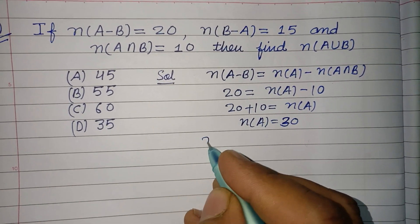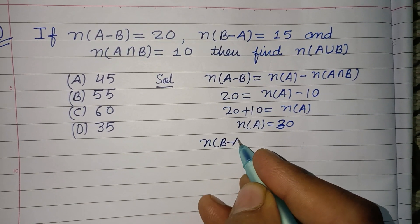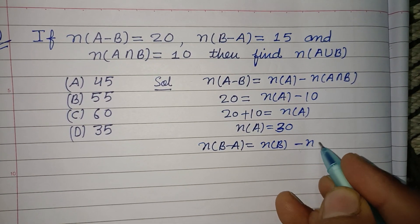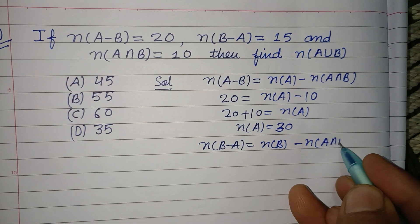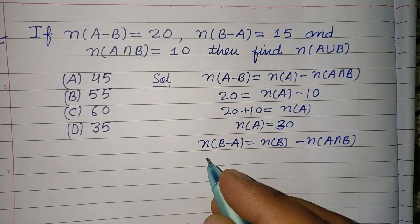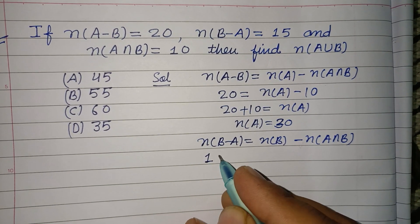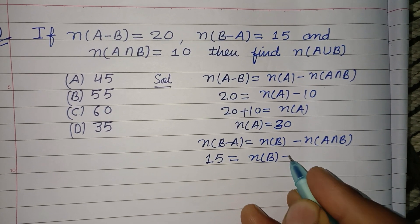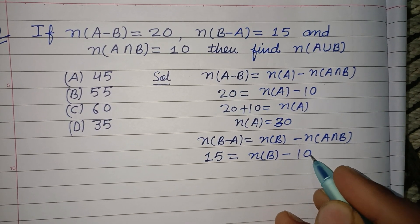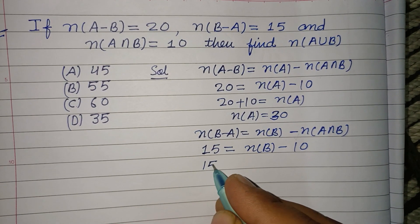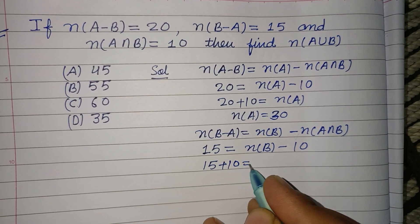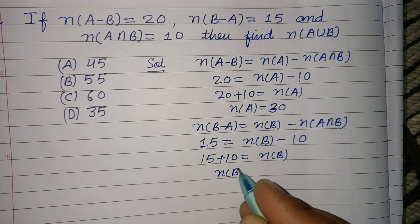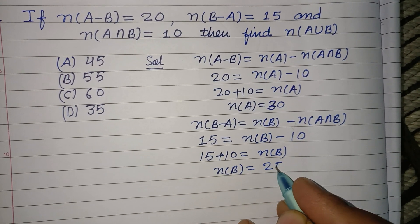Similarly, n(B-A) equals n(B) minus n(A∩B). n(B-A) is given as 15, so 15 equals n(B) minus 10. We bring 10 to the other side, so it becomes positive. Therefore, n(B) equals 10 plus 15, which is 25.